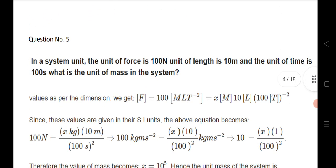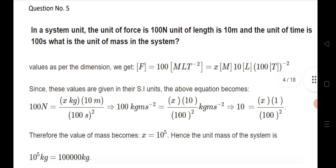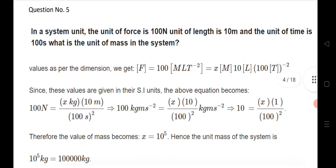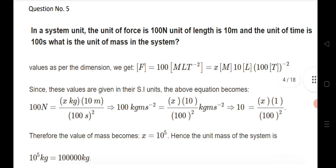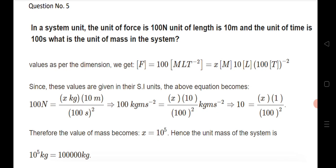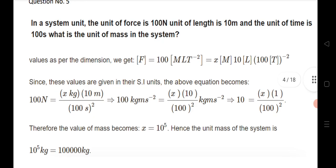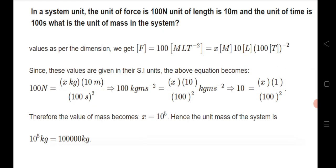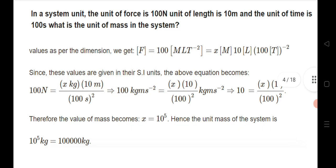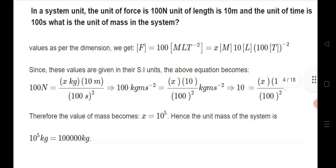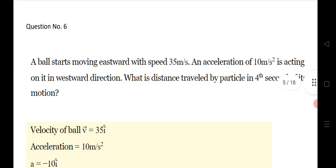Question number 5 is the latest type of question expected this year from units of measurement. We know the force formula F = MA and the dimensional formula F = MLT⁻². You need to find the mass using this dimensional formula. Since force is already given, substitute the length and time values to get the mass.